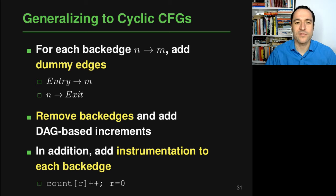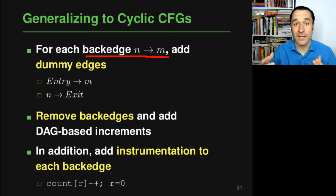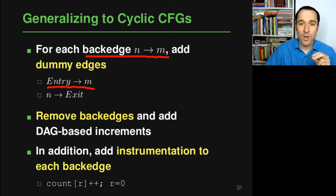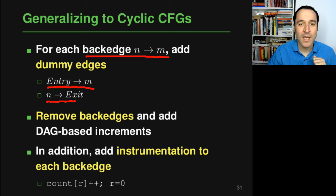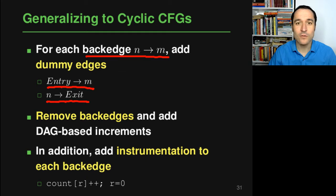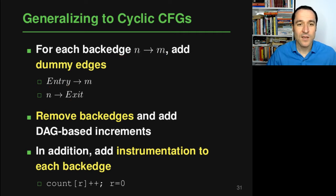The basic idea is to handle every back edge — an edge that makes an acyclic graph cyclic, essentially going back after a loop to the loop header. For each back edge, we add two dummy edges: one from the entry to where the back edge is going (e.g., from the function entry to the loop header), and one from the beginning of the back edge directly to the exit. Both of these edges do not normally exist in the control flow graph.